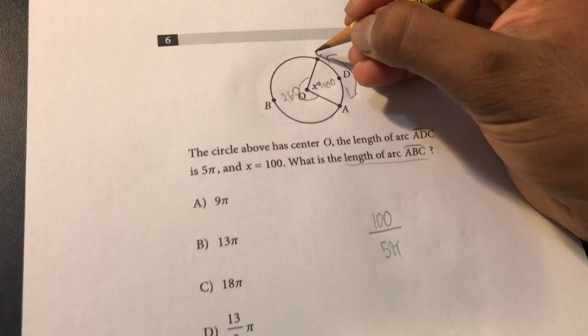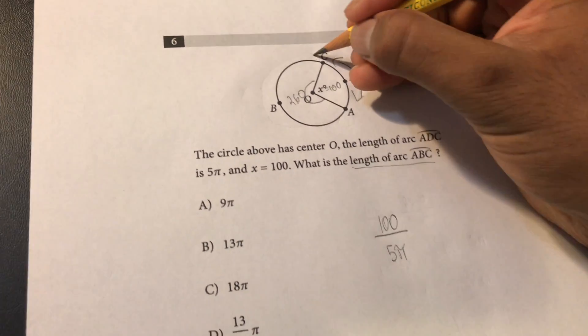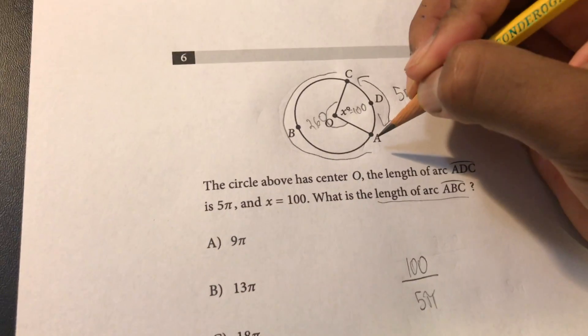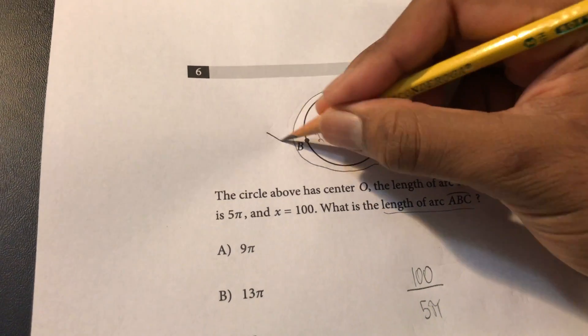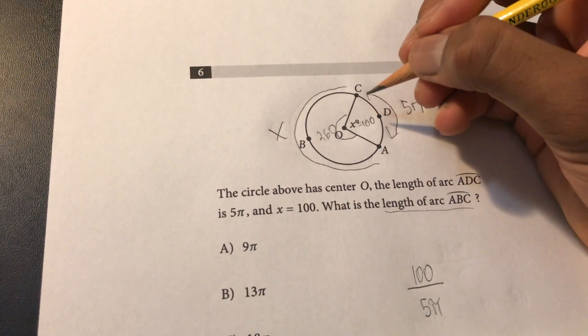Now it's asking us to solve for arc ABC so we have to find this whole thing over here and to do this we'll just name it x for now and we'll use ratios to solve this.